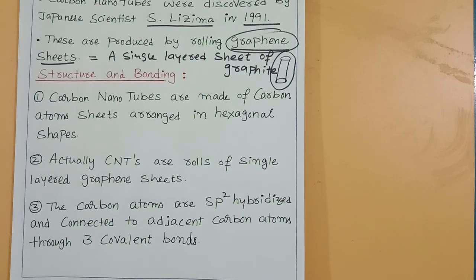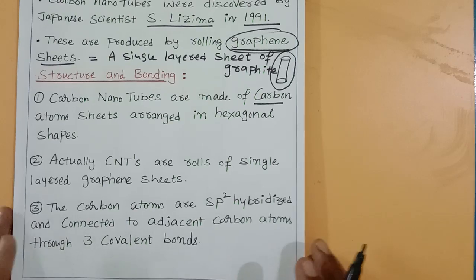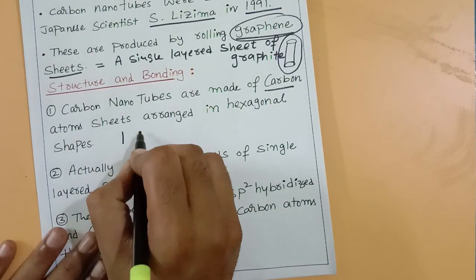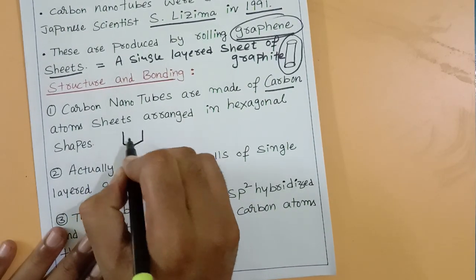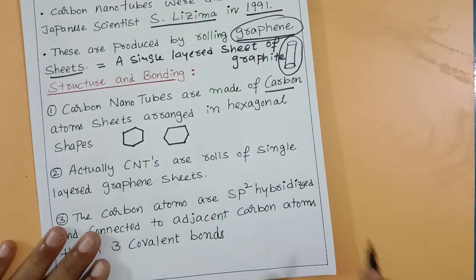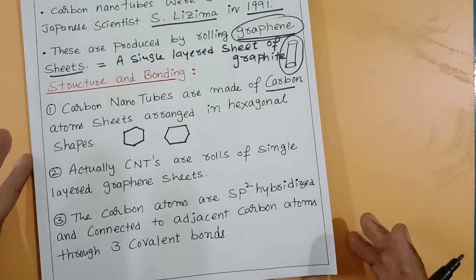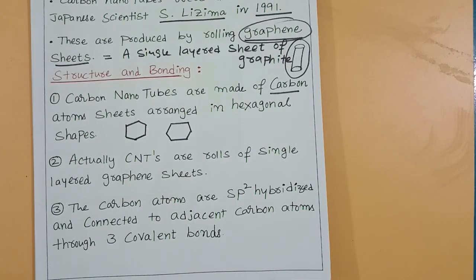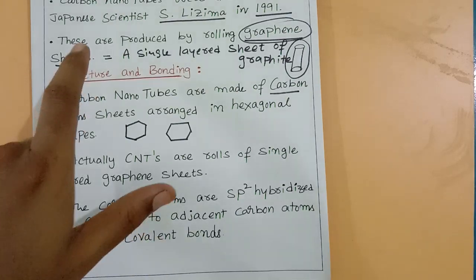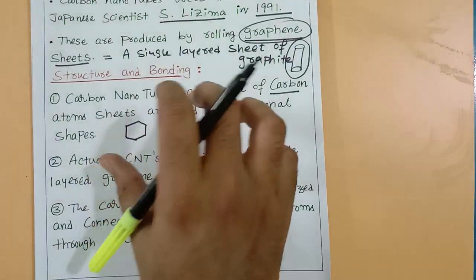Carbon nanotubes are made of carbon atom sheets arranged in hexagonal shapes. Carbon atoms are arranged in hexagonal form — six atoms per hexagon. Carbon nanotubes are rolls of single layered graphene sheets. That is what we tell — to roll a single layer of graphene sheets gives you carbon nanotubes.